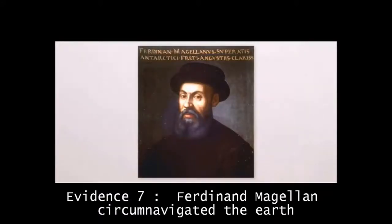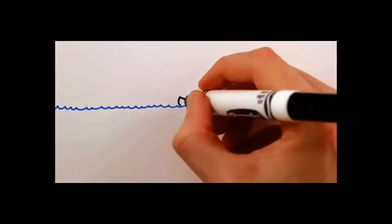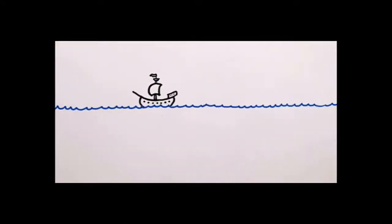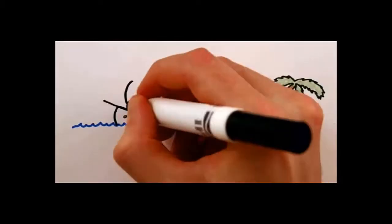Evidence 7: Ferdinand Magellan and many people afterwards circumnavigated the Earth. That means he left headed west, continued going west and came back where he started, still going west. After Magellan's death one of his ships led by Juan Sebastian del Cano finished the journey in 1521.